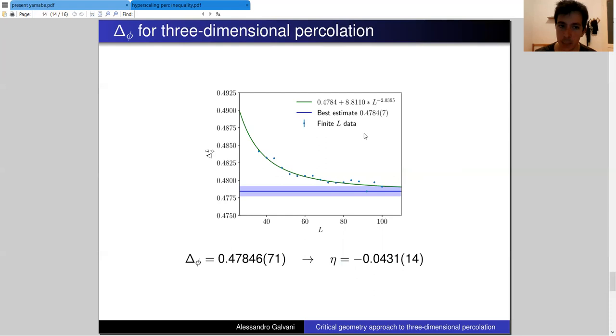What we have obtained is that for each lattice size L, we have an estimate of delta phi. As L increases, we see that delta phi shrinks and it approaches a constant value. Through an extrapolation, we can obtain a value of delta phi and correspondingly the anomalous dimension eta. These values are compatible with and actually a bit more precise than other estimates obtained by different means.